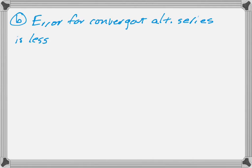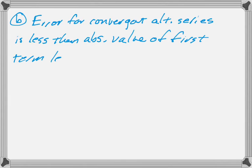Part B requires us to know the error for an alternating series. So the error for a convergent alternating series is less than the absolute value of the first term left off. And they ask about alternating series frequently. And so let's figure out what the first term left off was.